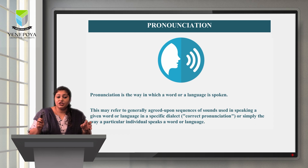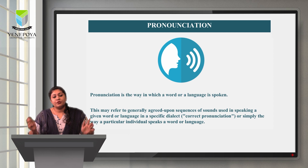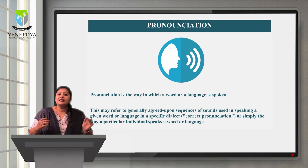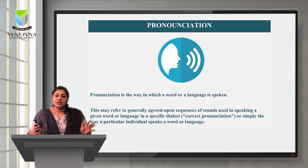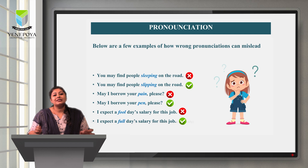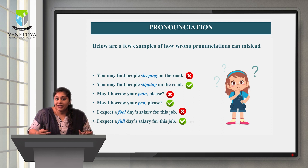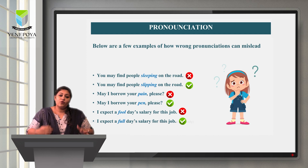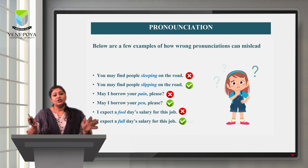These may be generally agreed-upon sequences of sounds used in spoken language or a word in a specific dialect. Everybody has what is called correct pronunciation. It depends on a person's social status, the country they grew up in, and their background — these give a person a different accent or different pronunciation. Wrong pronunciation can mislead the listener; what the speaker intends to convey can mean something entirely different.